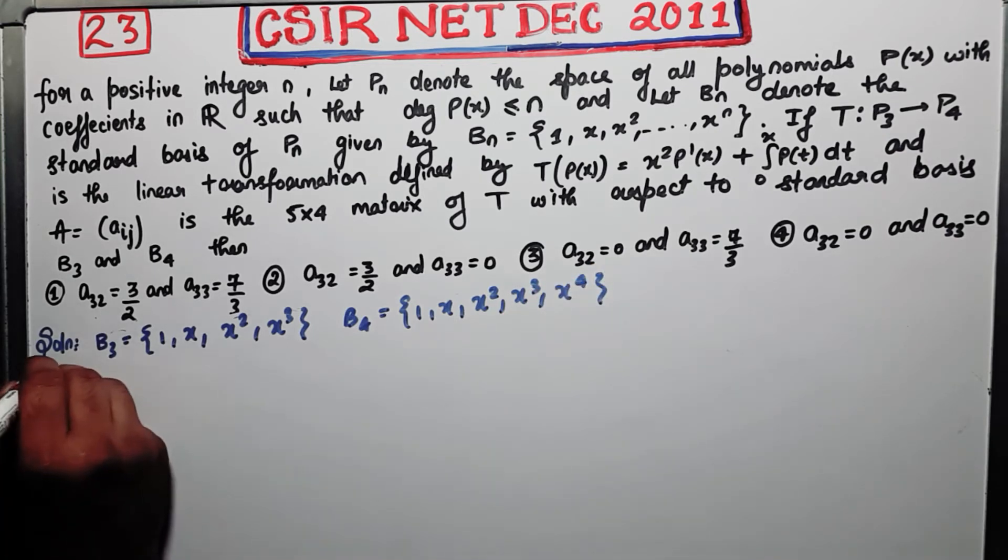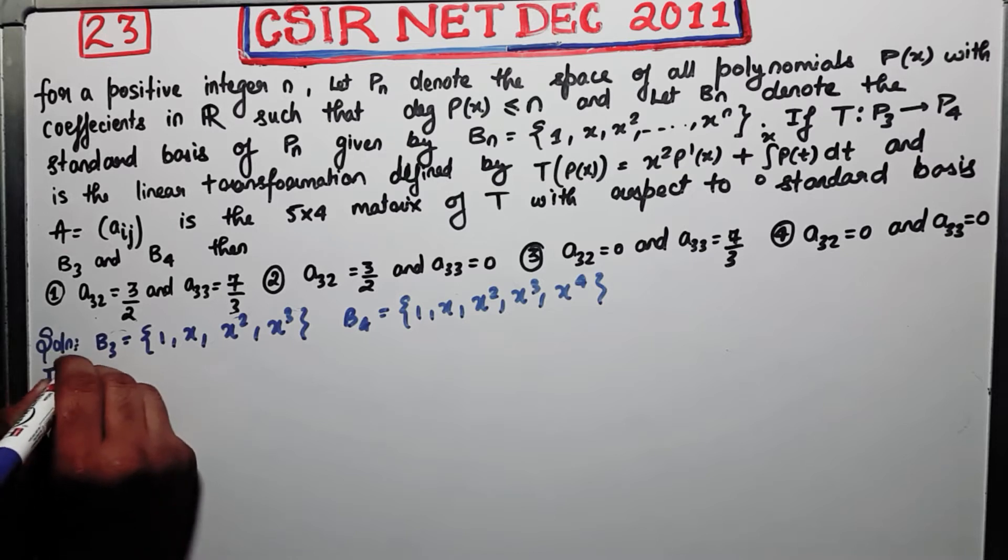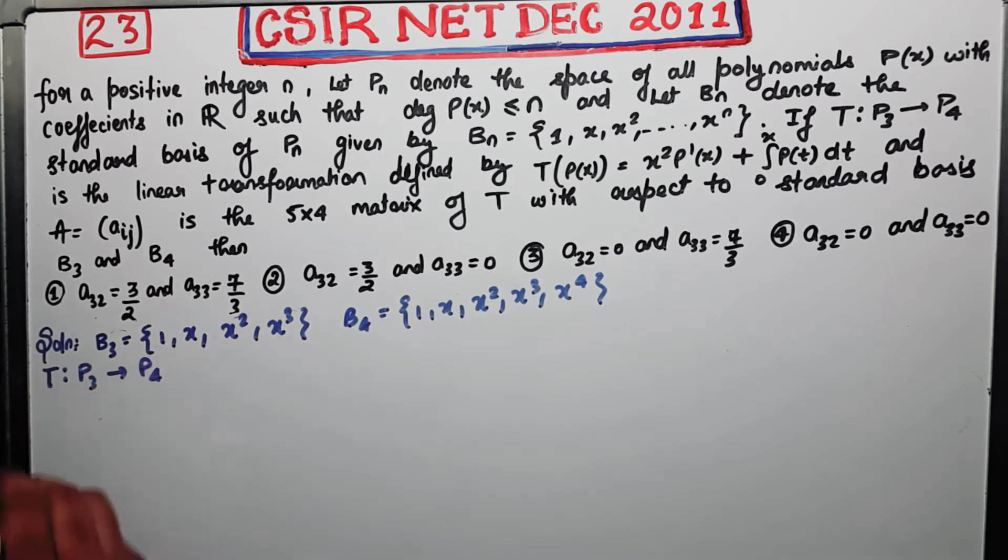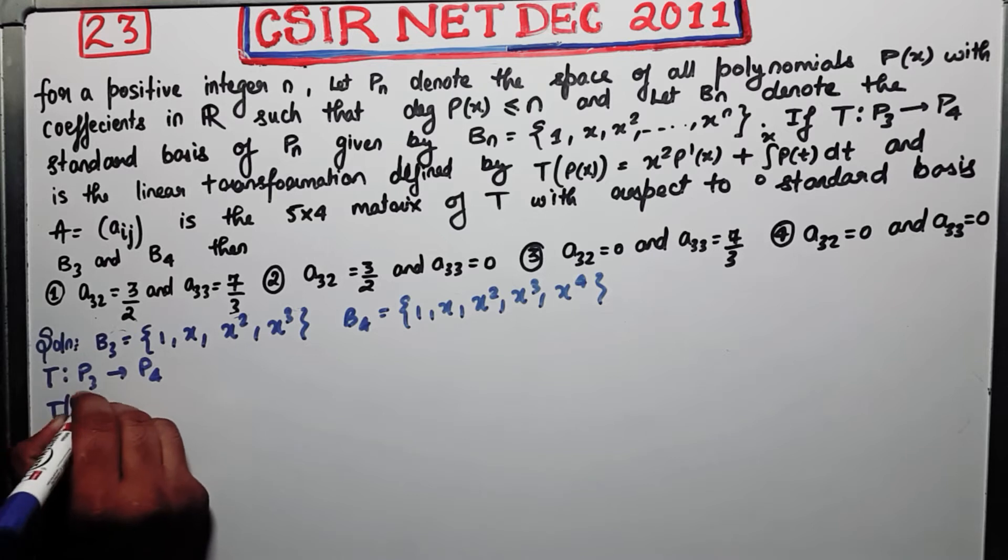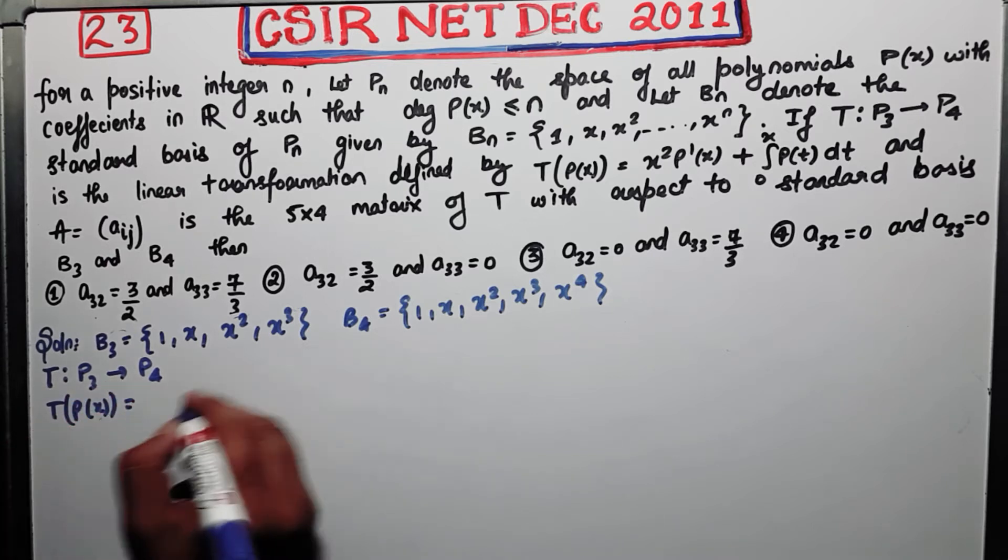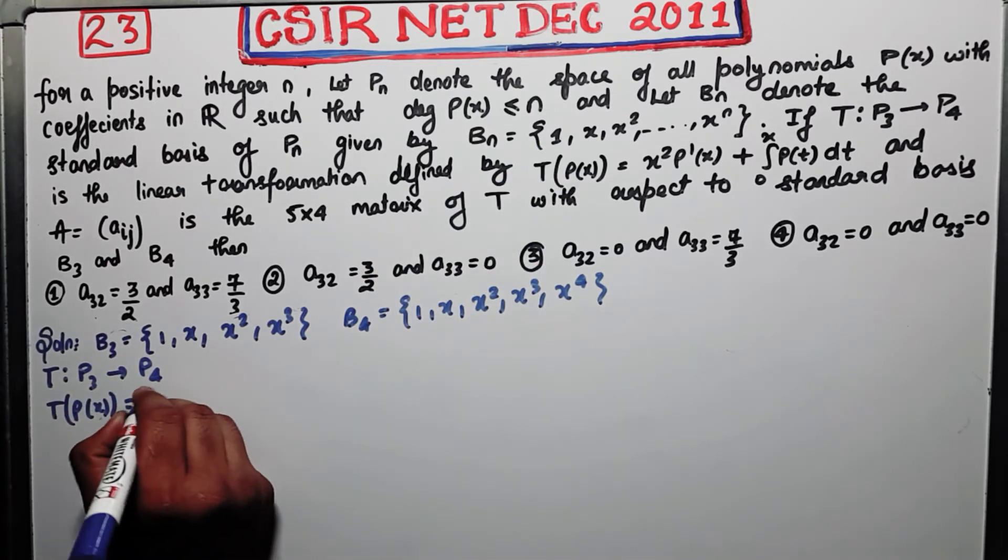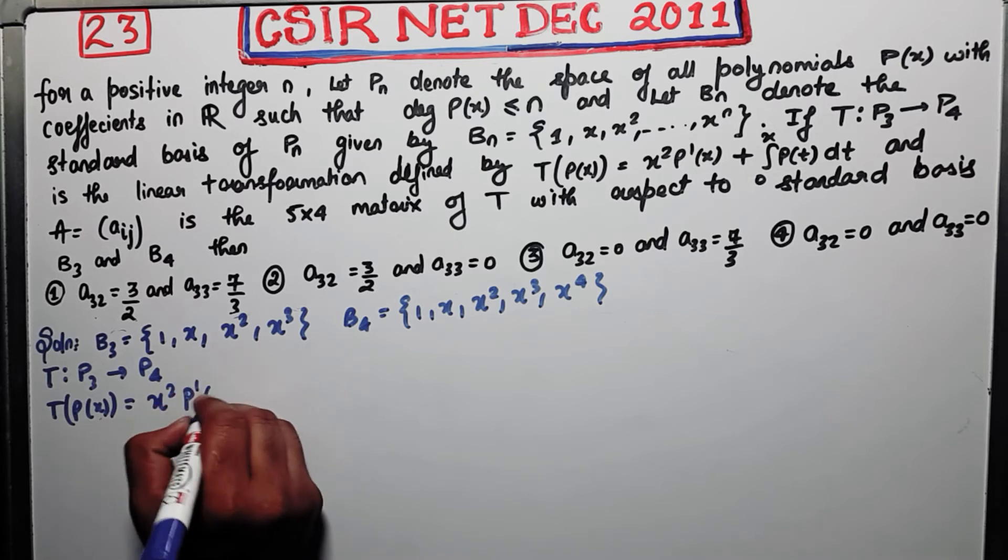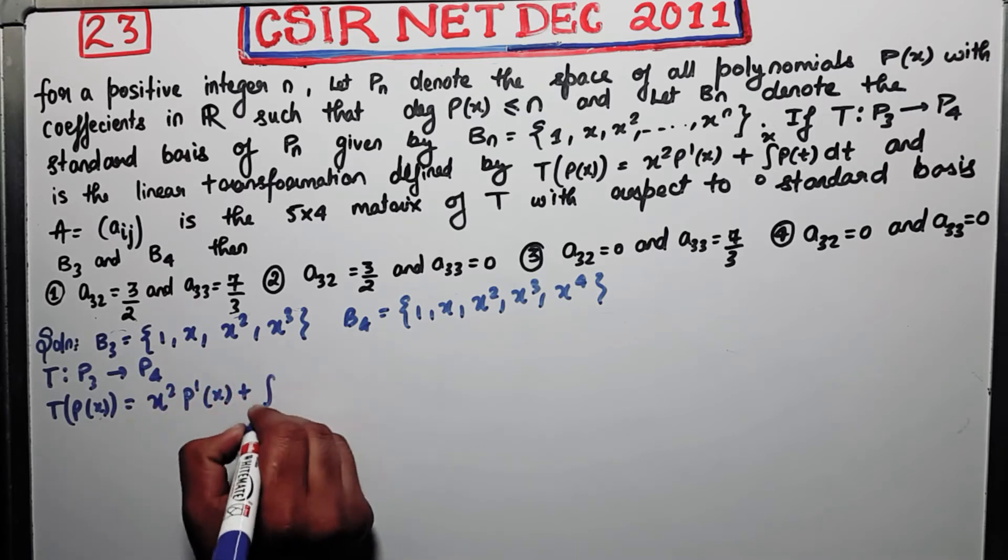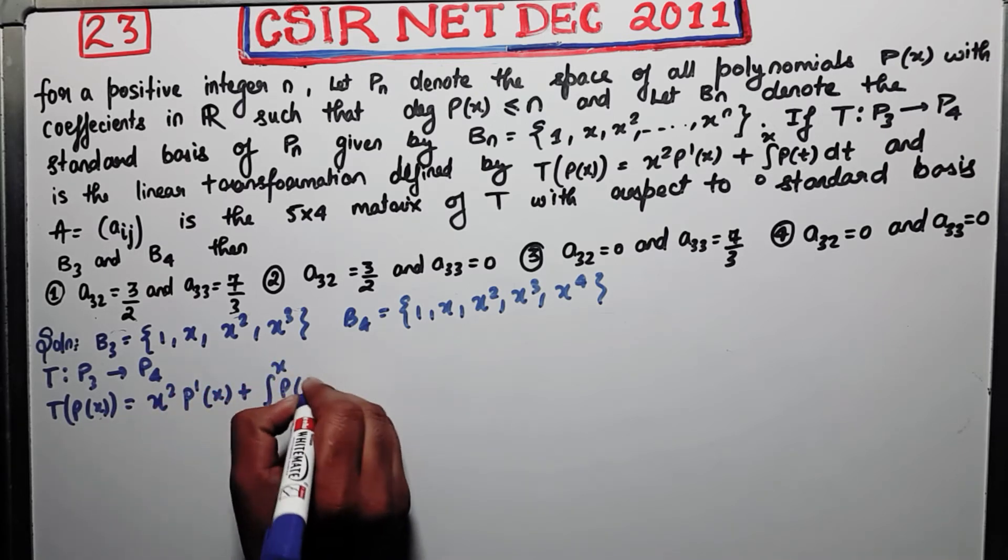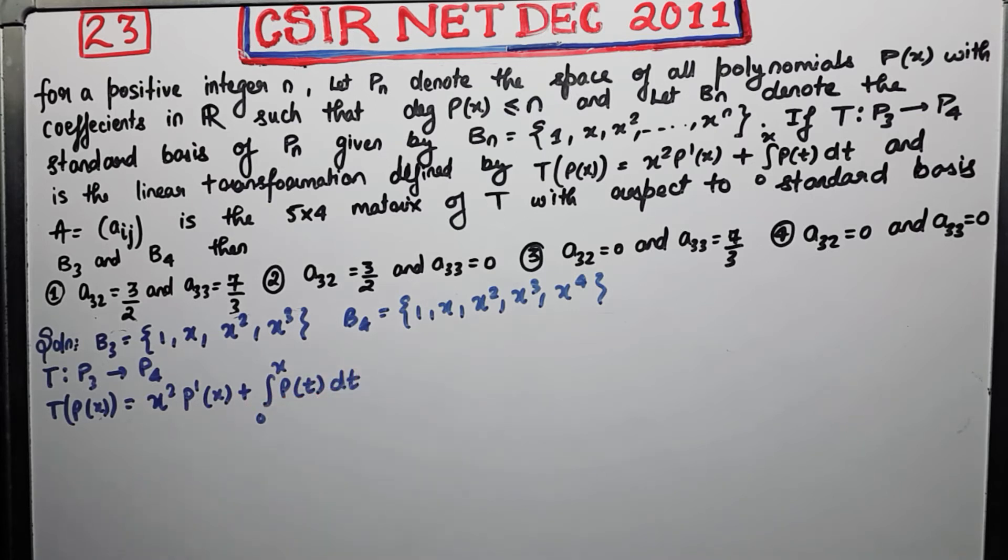Now firstly write what is your T? T is actually a transformation from P_3 to P_4. So it is given by T(p(x)) equals x²p'(x) plus integral from 0 to x of p(t)dt. This is what the question is and this is what is given to us.